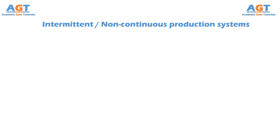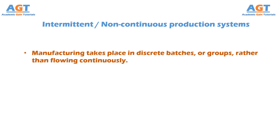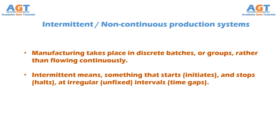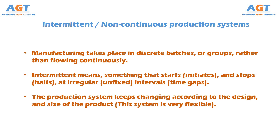Now let's discuss the intermittent production systems. These are the non-continuous production systems, where production or manufacturing takes place in discrete batches or groups rather than flowing continuously. Intermittent means something that starts and stops at irregular or unfixed intervals. In the intermittent production system, goods are produced based on customer orders. Large varieties of products of different sizes are produced, and since the design of these products keeps changing, the system also keeps changing accordingly. Therefore, this system is very flexible, and goods are produced on a small scale.